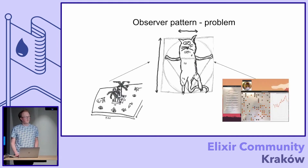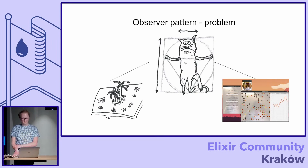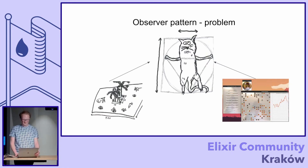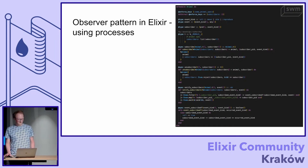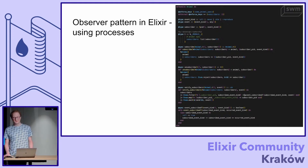The problem I was solving was a simple evolution simulation, where there were a lot of animals on some kind of map that transformed their state, and you need a lot of other components to get notifications about that transformed state. In Elixir we can do that using processes, and other processes can subscribe to the ones whose states are transformed — with a simple interface for subscription and unsubscription, and a simple notification function to send information about state changes.